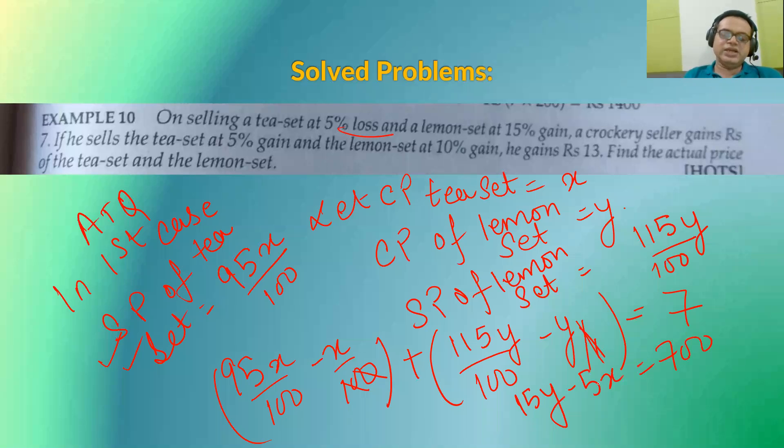Here it will be minus 5X upon 100. Here it will be 15Y upon 100 and this will be equal to 7. So multiply it. So one equation that I am going to get is that will be 15Y minus 5X equal to 700.